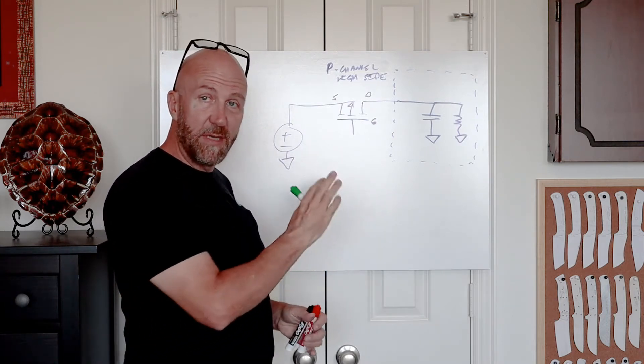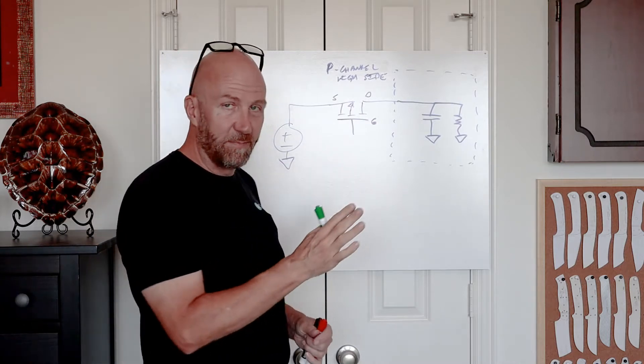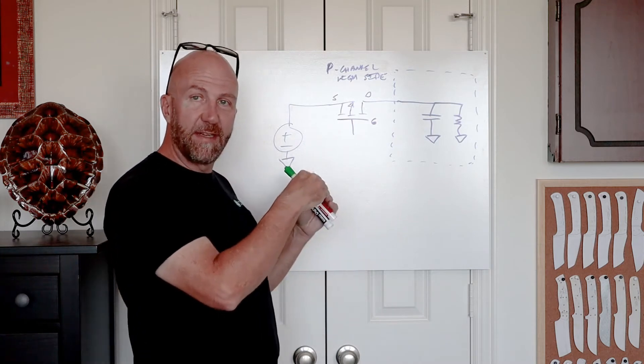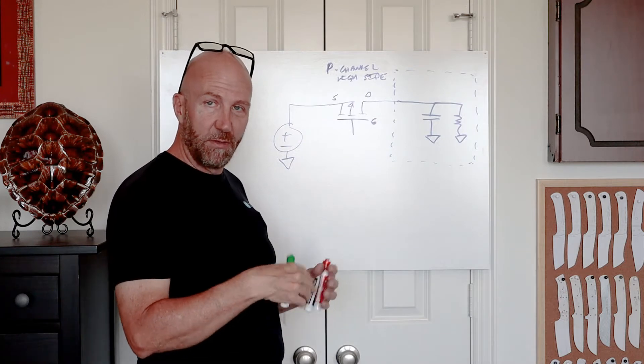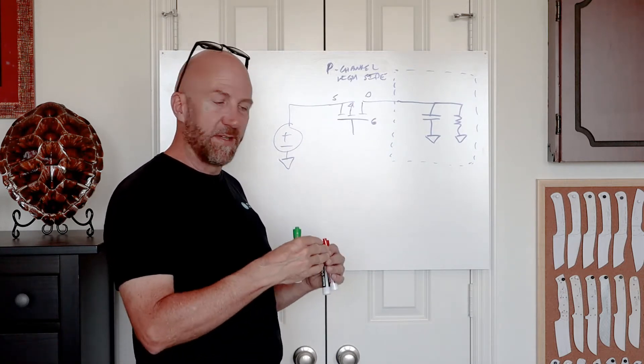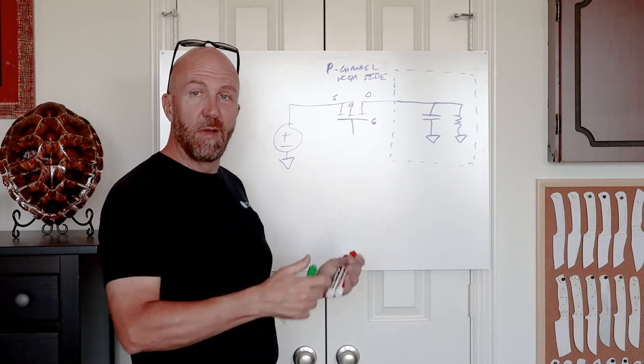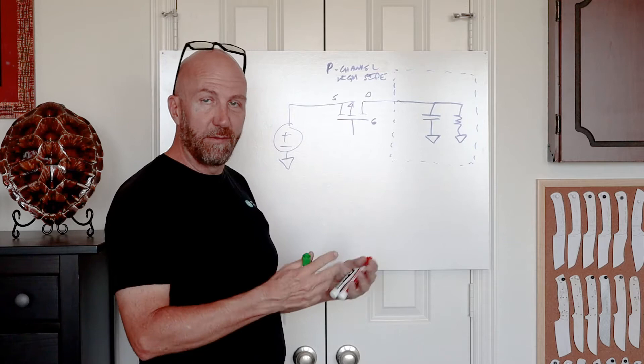One of the nicest things about p-channel is that unlike an n-channel, it doesn't require a charge pump. When you're driving an n-channel FET and you want to generate that gate voltage that goes above the input supply rail, you have to have a charge pump. You have to have some kind of switch capacitor, typically a charge pump that generates a supply that goes 5 or 10 volts or 1.8 volts above the rail you're controlling, so that you can enhance the gate of the FET when everything is fully turned on.